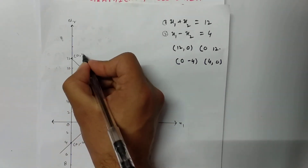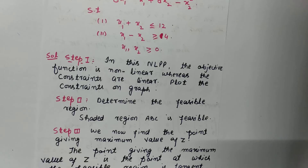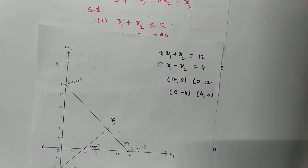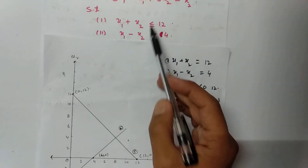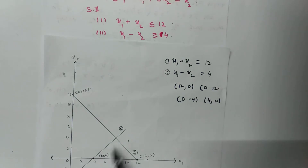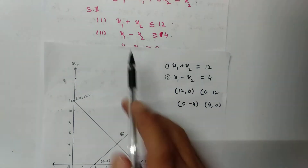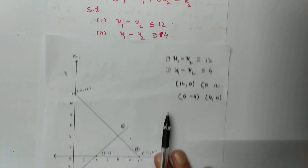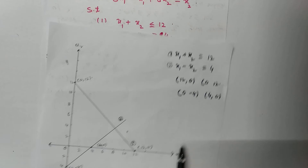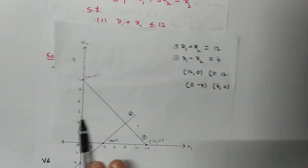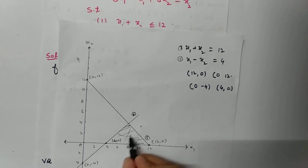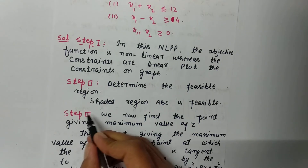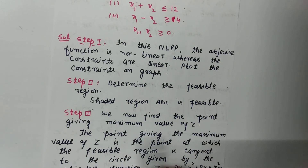Now we determine the feasible region. For the first constraint, x1 + x2 ≤ 12, the area is below that line. For x1 − x2 ≥ 4, the area is above that line. Since x1, x2 ≥ 0, we consider only the first quadrant. The common region satisfying all constraints is the required feasible region.